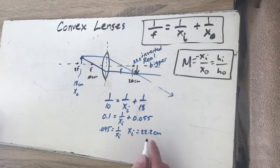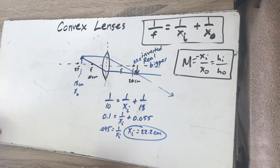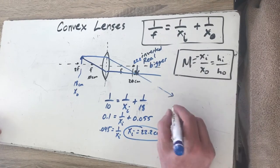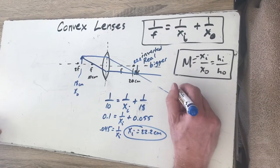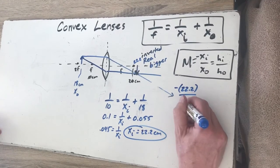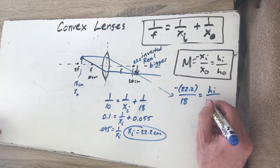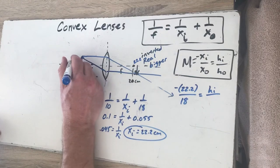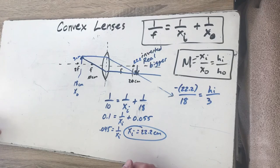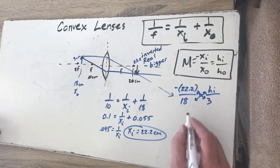Now the other thing I can do is use my magnification equation. I don't have a magnification value, but I do have, let's see, negative XI which is 22.2 over XO which is 18. There's that distance ratio equals HI over the height. And let's say this was, I'm just going to make up a number, how about three centimeters tall? So our object was three centimeters. If we cross multiply and solve for this, we're going to get the height of the image equal to negative 3.7 centimeters.